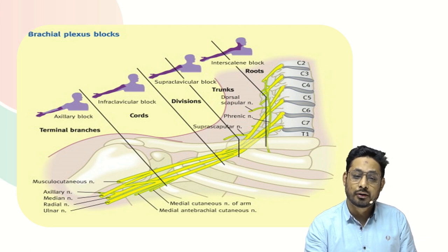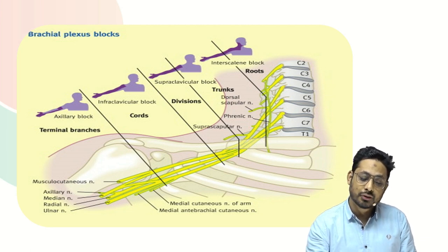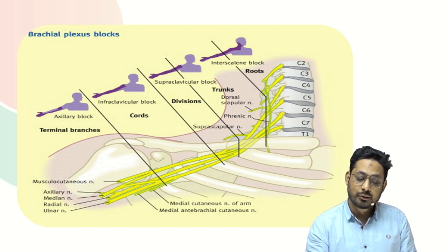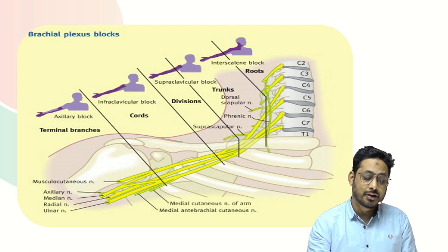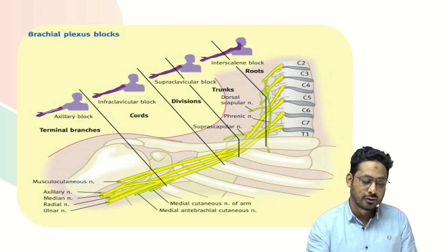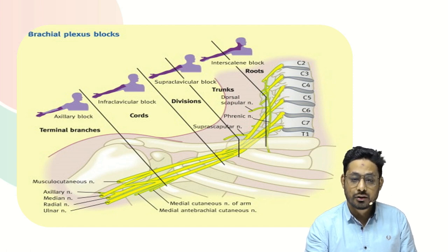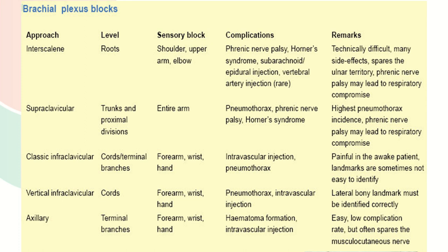The first is interscalene block, which blocks the root. The second is supraclavicular block, which blocks at the level of the division and the trunk. The third is infraclavicular block, which blocks at the level of the cord. And the next is axillary block, which blocks at the terminal branches such as axillary nerve, median nerve, radial nerve, and ulnar nerve. This table explains the different complications of the brachial plexus block.